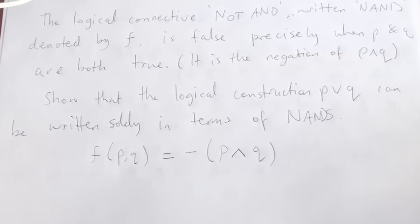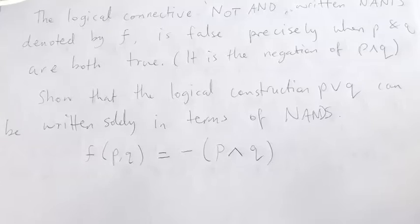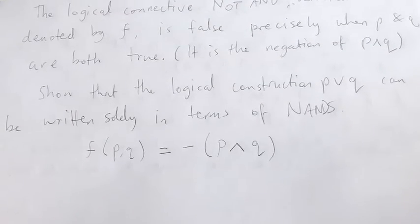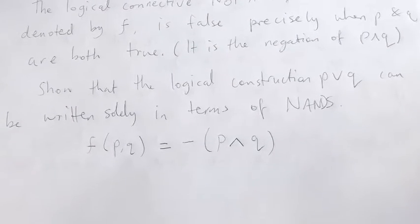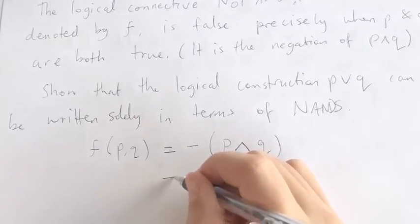NAND is defined to be F of P and Q is equal to the negation of P and Q.